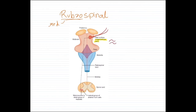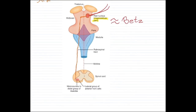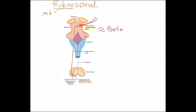The magnocellular part contains large neurons similar to the Betz cells found in the primary motor cortex that give rise to large neurons in the corticospinal tract. From the magnocellular part, the nerve fibers cross over to the other side immediately and go down in the lateral column of the spinal cord, similar in course to the lateral corticospinal tract. It terminates on the lateral group of anterior horn cells, providing nerve fibers to the distal group of muscles — controlling precision movements of the hands and fine movements of the fingers, just as the corticospinal tract does.